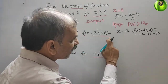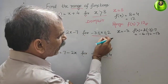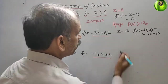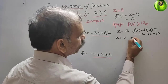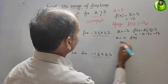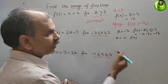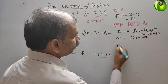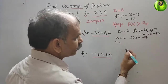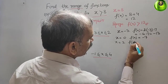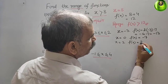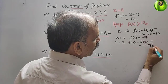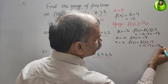When finding the range, always try to take an in-between number — we will take x = 0. So f(x) = 2(0) - 7, that is -7. Now next, we will take x = 2 as the higher value. So f(x) = 2(2) - 7, which is 4 - 7, that is equal to -3.